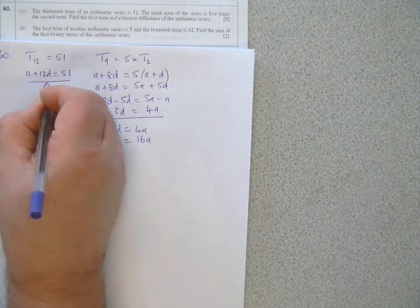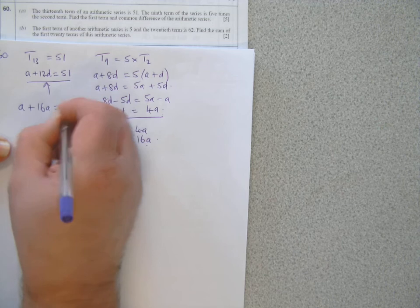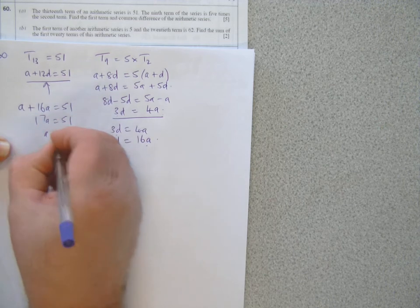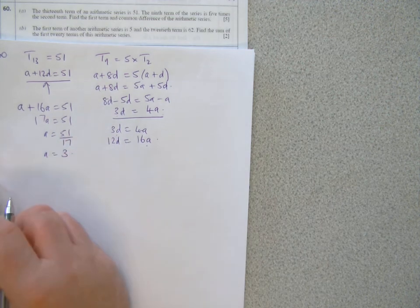And now sub into this equation, I've got A plus 16A is 51, so 17A equals 51. 51 over 17, and that goes in 3 times.